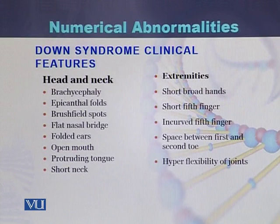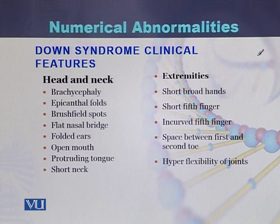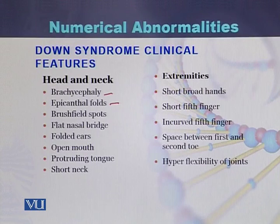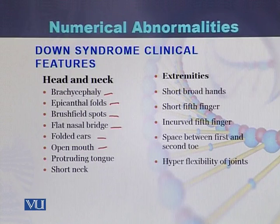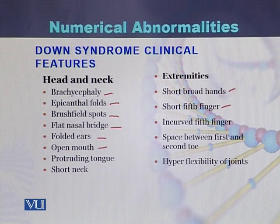The detailed clinical features in case of head and neck as well as extremities: in head and neck we can see brachycephaly, epicanthal folds, Brushfield spots, flat nasal bridge, folded ear, and open mouth. In the extremities, these children have short and broad hands, short fifth finger, incurved fifth finger, and a space between the first and second toe. These are the complete clinical features present in children with Down syndrome.